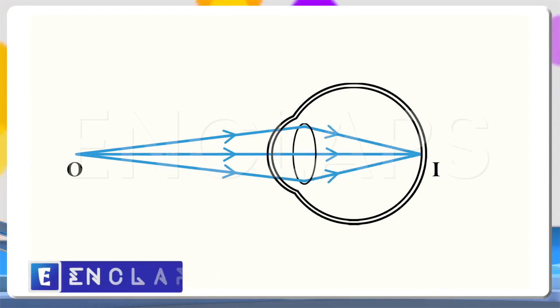In the third diagram, O is the object position and I is the image position. Here, the image is formed on the retina itself. So, a clear image can be obtained.